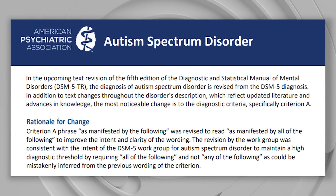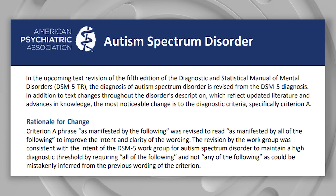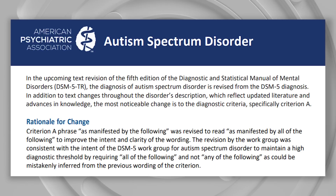These are fact sheets that were available on the American Psychiatric Association's website. I'm going to read the fact sheet and then there's also a bit more insight from an article by Spectrum that helps explain more. In the upcoming text revision of the fifth edition of the Diagnostic and Statistical Manual of Mental Disorders, DSM-5-TR, the diagnosis of autism spectrum disorder is revised from the DSM-5 diagnosis. In addition to text changes throughout the disorder's description reflecting updated literature and advances in knowledge, the most noticeable change is to the diagnostic criteria — specifically Criterion A.